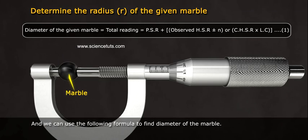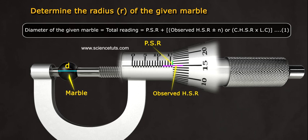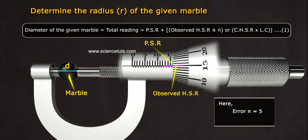We can use the following formula to find diameter of the marble. Diameter of the given marble equals total reading equals PSR plus observed HSR plus or minus n, or CHSR into LC. Equation 1.